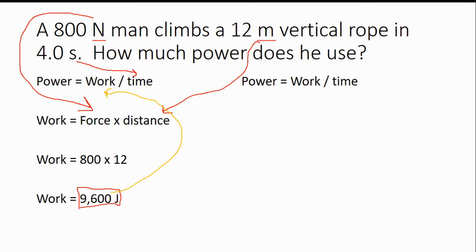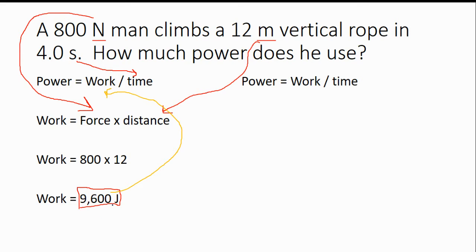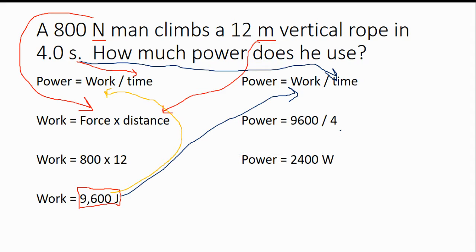We can then take that and plug it back into our original equation. So since we know our work, we know our time, we can plug it into this equation. We plug our work into the work, we take our time, we plug it into our time. And we get power equals 9,600 divided by 4. We plug that into our calculator. I believe you should get 2,400.